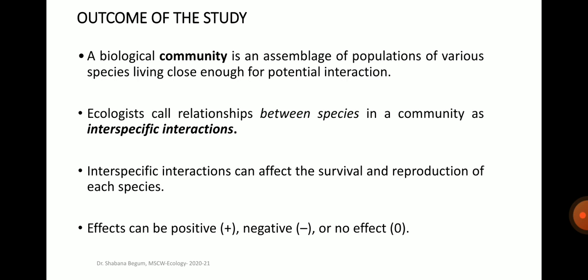Finally, the outcome of the study — what you have learnt: a biological community is an assemblage of populations of various species living close enough for potential interaction. Ecologists call relationships between species in a community as interspecific interactions. The interspecific interactions can affect the survival and reproduction of each species. The effects can be positive, negative or have no effect. With this information, I will conclude my lecture and before that, I want you to answer the following multiple choice questions.